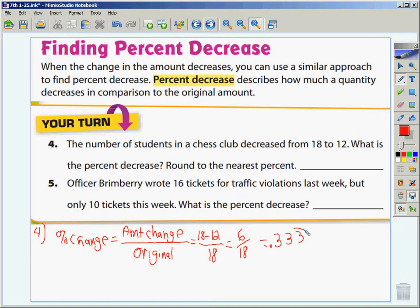0.333 repeating. If I change this to a percent, if I round to the nearest whole percent, would I need to keep that 0.3? No. This would just become 33%. And it is a decrease because it went from 18 to 12. Definitely a decrease.